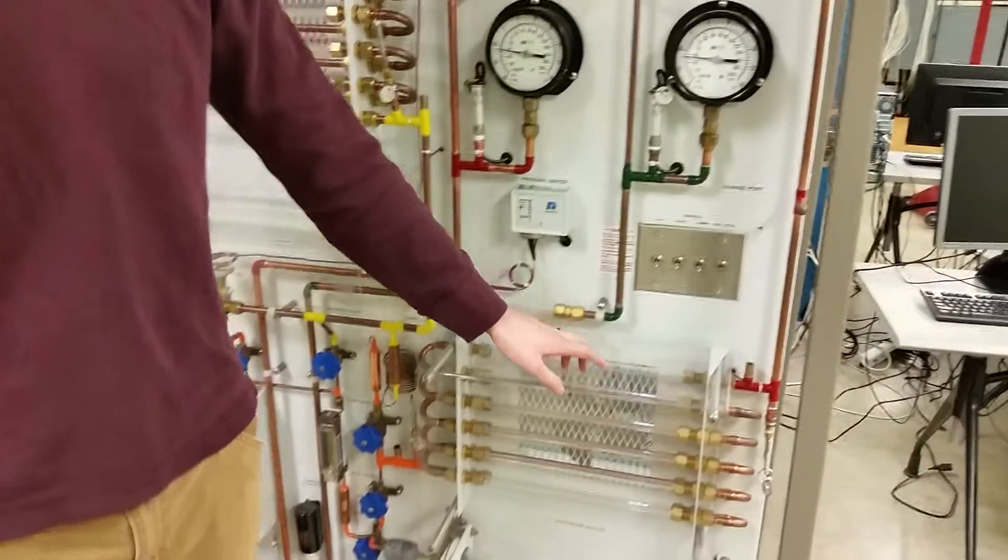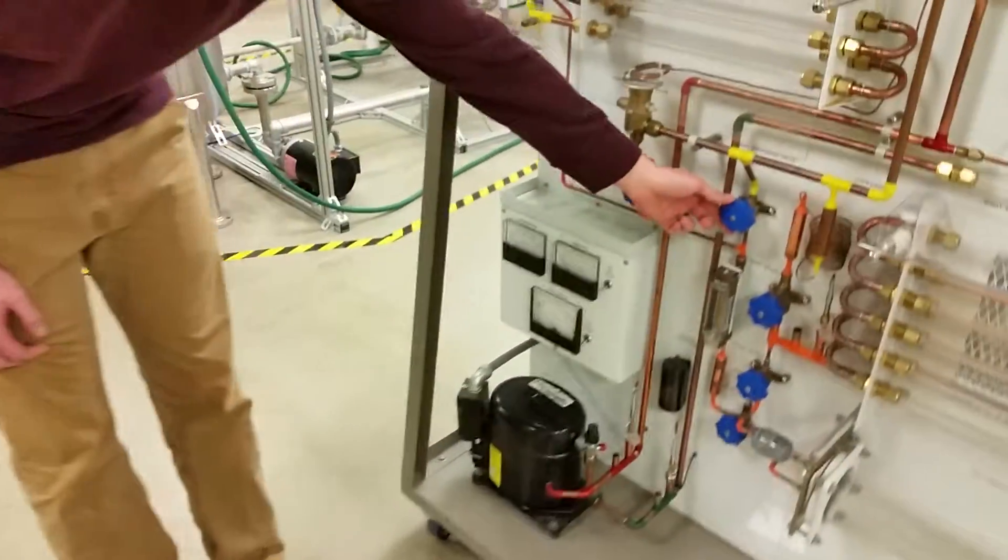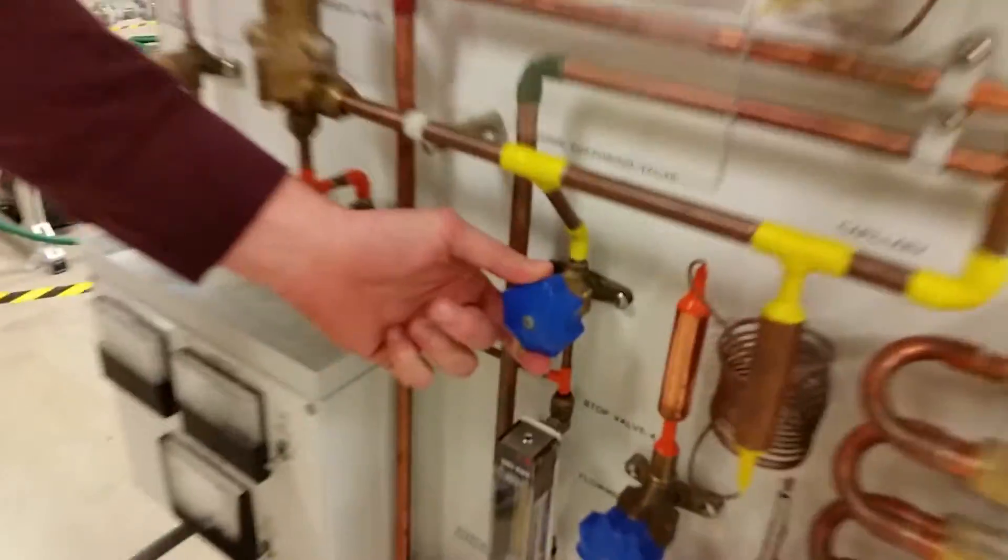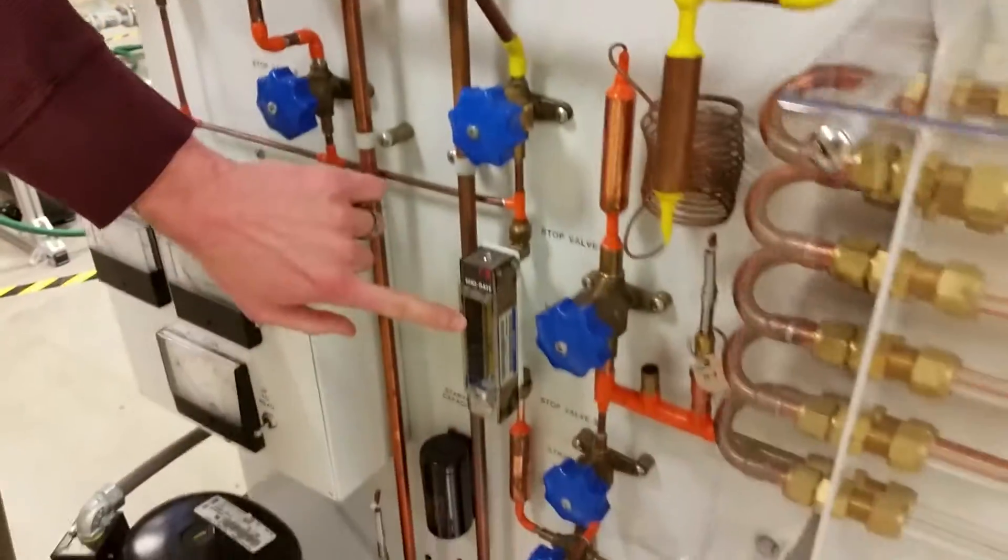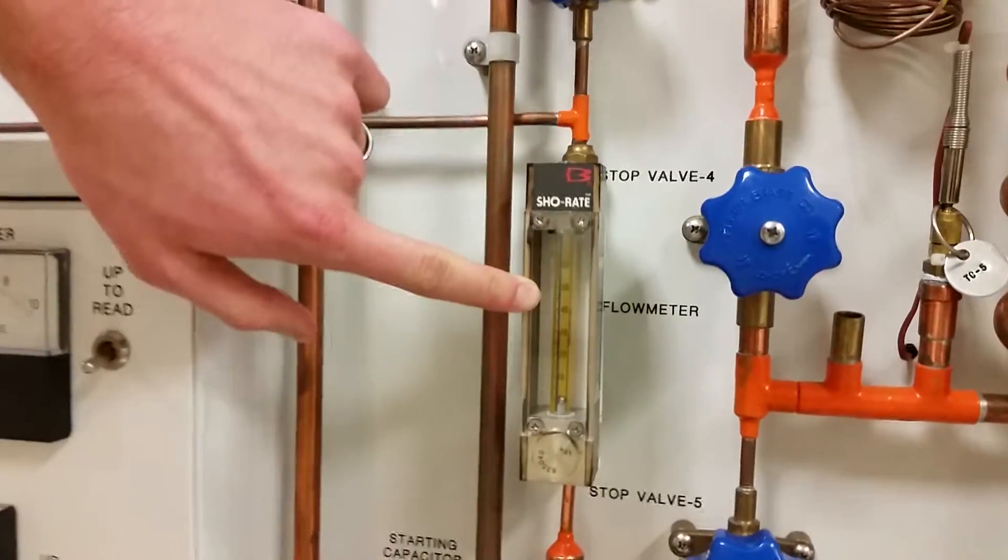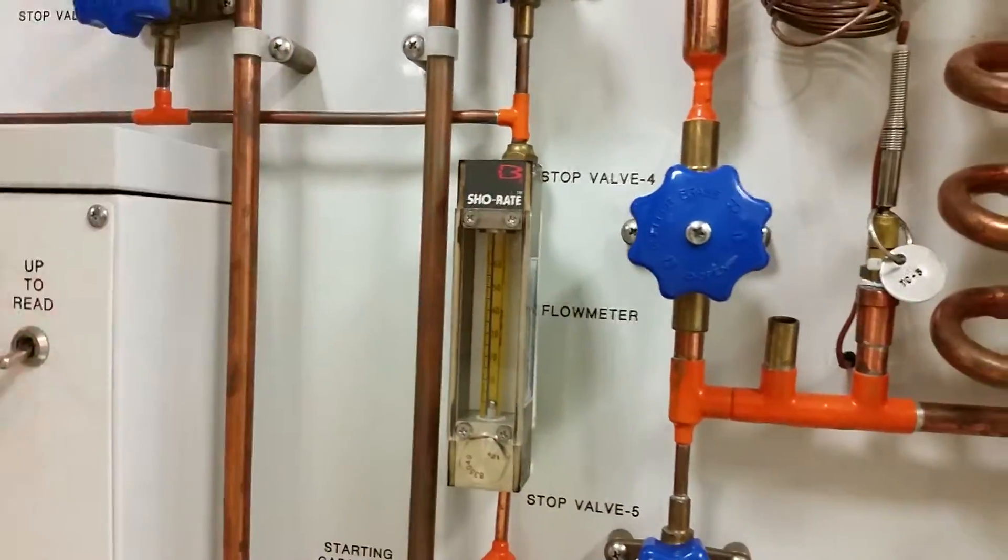Turn on your fans and your compressor, and then you set your flow rate using this valve, the HEB valve right here. There's a flow meter, and you want it set at 45 for a few minutes to start up, just to make sure your machine is running right.